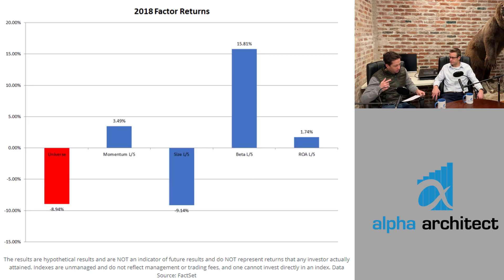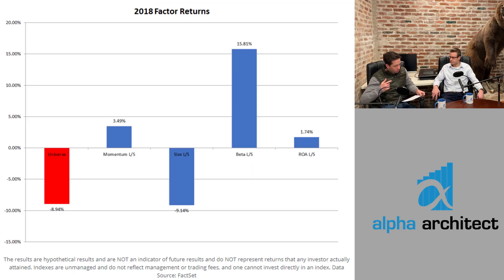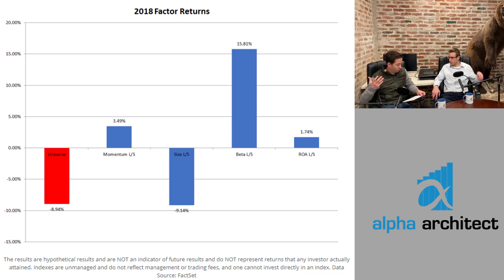So then you looked at other popular factors and how they performed. You looked at momentum, size, beta — beta is the biggest factor — and ROA versus the universe of stocks, that 1,000 stocks. What did those results show? How did these factors look?